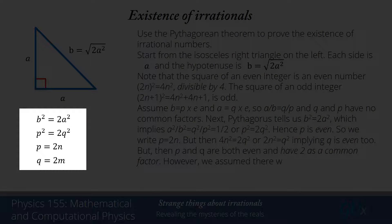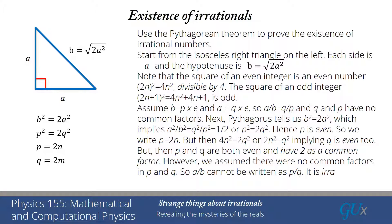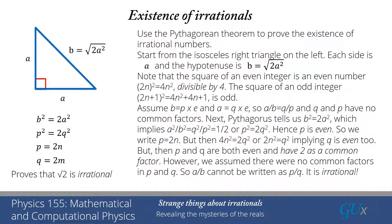This means that both p and q have 2 as a common factor, but we assumed at the beginning there were no common factors in p and q. So the only way that this can hold is that a over b cannot be written as p over q. It must be an irrational number. This is the way you can show that irrational numbers actually exist. There are numbers that cannot be written as p over q, where p and q are both integers.